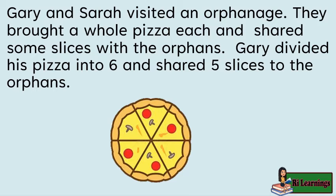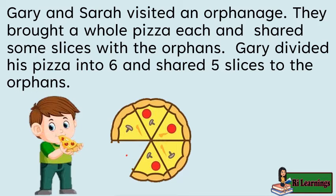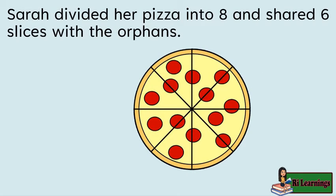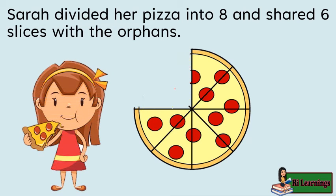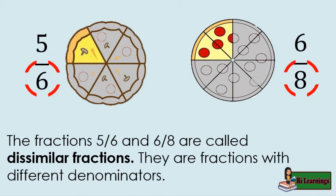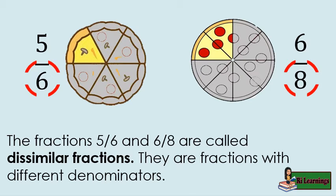Gary and Sarah visited an orphanage. They brought a whole pizza each and shared some slices with the orphans. Gary divided his pizza into six and shared five slices with the orphans. Sarah divided her pizza into eight and shared six slices with the orphans. The fractions five-sixths and six-eighths are called dissimilar fractions — they are fractions with different denominators.